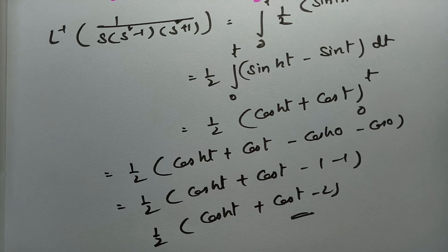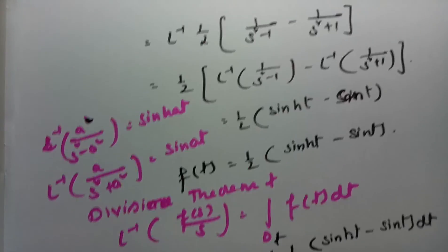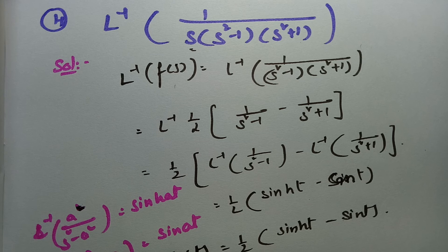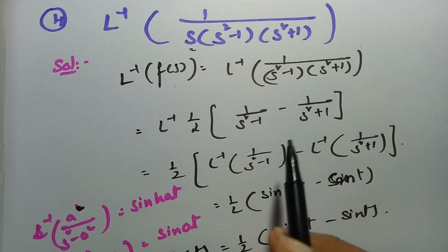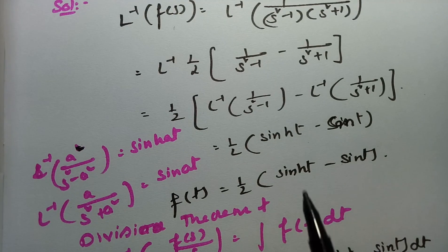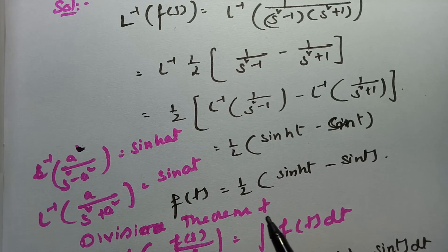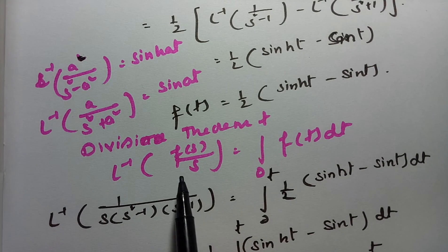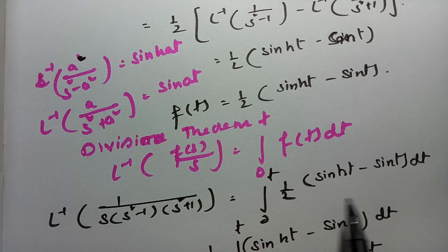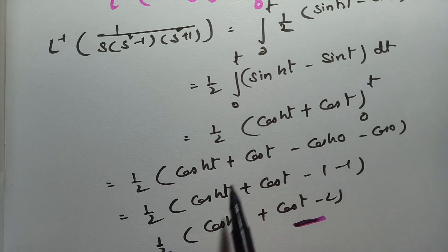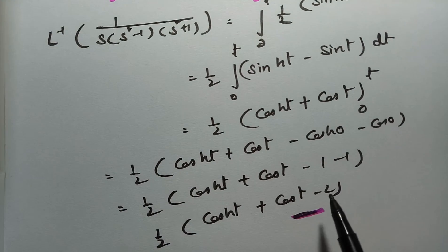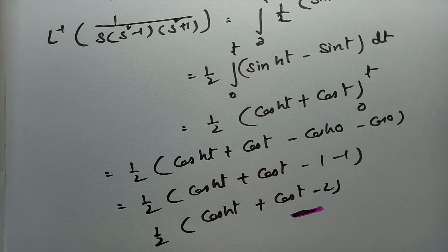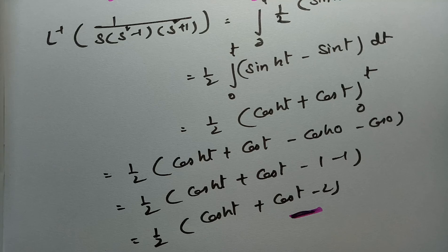This is the final answer. For each model I have solved step by step. After resolving into partial fractions and applying the inverse Laplace transform, I got f(t) = (1/2)(sinh(t) − sin(t)). After applying the division theorem and integrating once, then substituting upper and lower limits, I got the final answer: (1/2)(cosh(t) + cos(t) − 2).